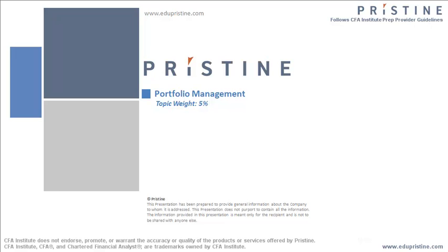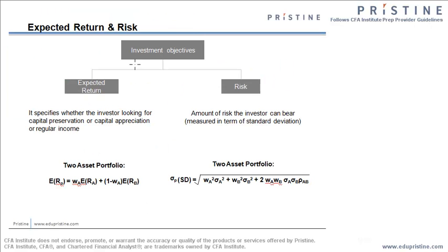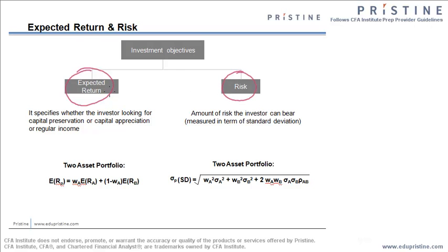One of those concepts is the expected risk and expected return calculations. The investment objectives are based on only two components: the first one being the expected returns and the second one being the expected risk from a particular investment.